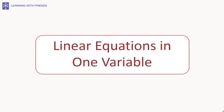Hello everyone, welcome to Learning With Friends. Today we are going to discuss linear equations in one variable. A linear equation in one variable is an equation where the highest power of x is 1, making it linear, and there is only one variable x, making it an equation in one variable.